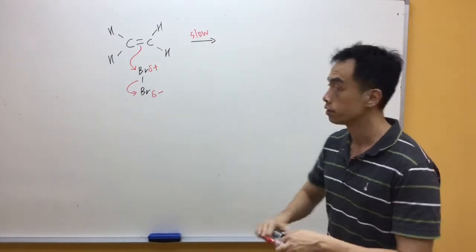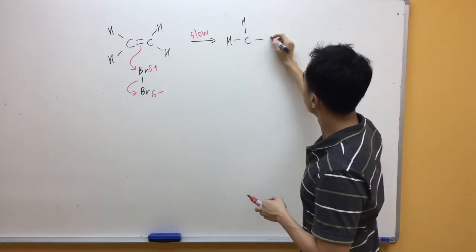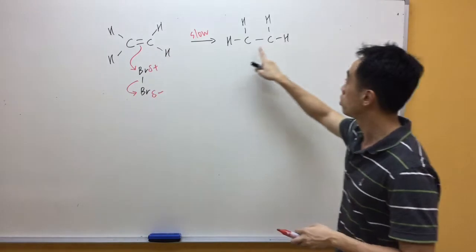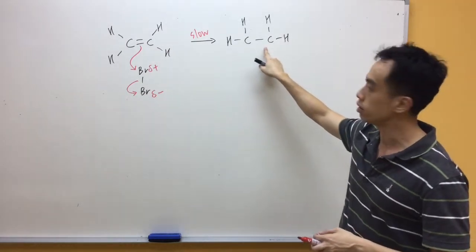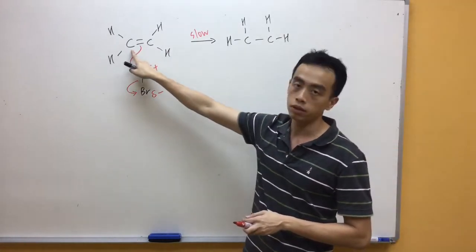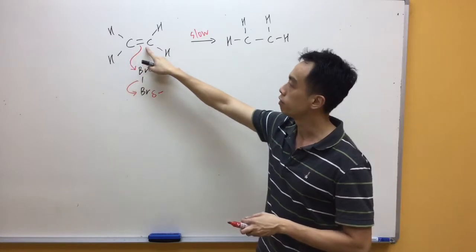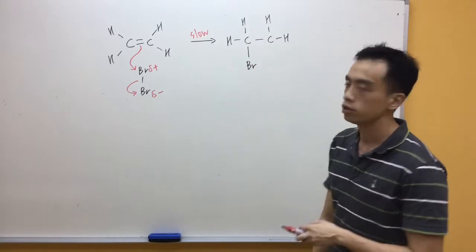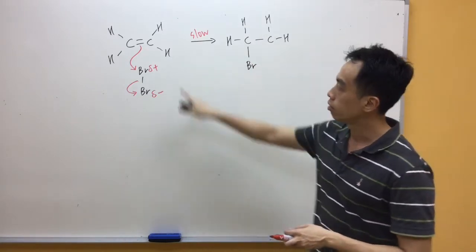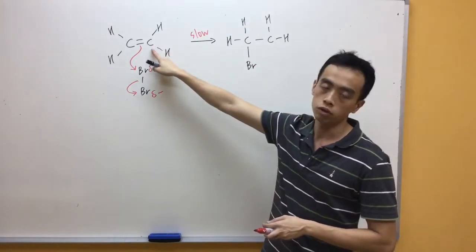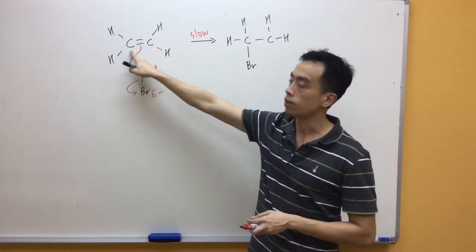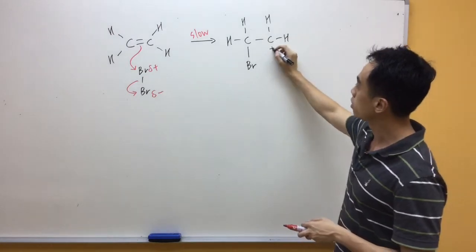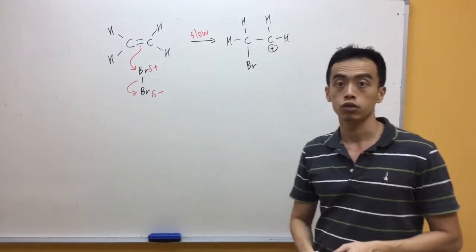The product's form will be something like this. We know that the double bond will open up, so it becomes a C single bond C. Let's say this is the carbon that takes both of these electrons to form a bond with Br. This will be my C-Br bond. This carbon now will have short of one electron because it is being taken away by this carbon to form a C-Br bond. So this carbon now becomes positively charged, short of one electron.